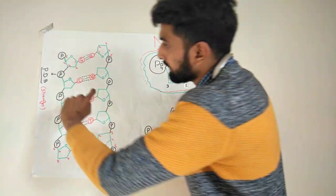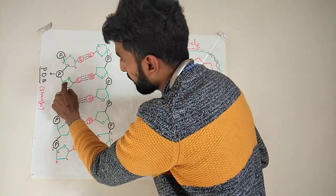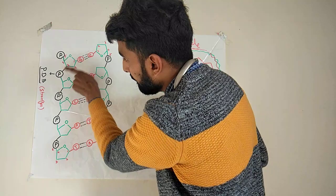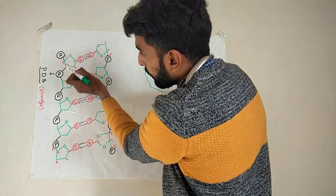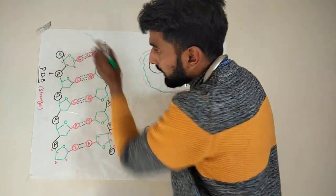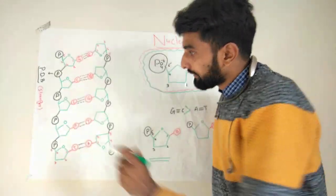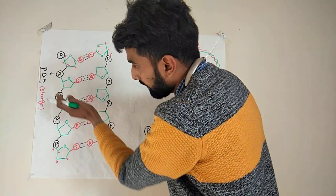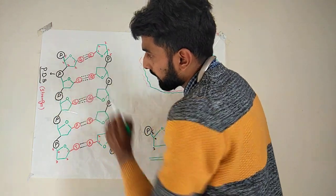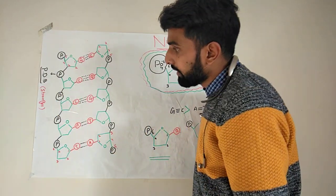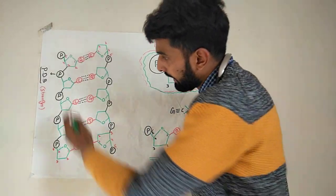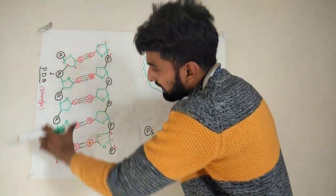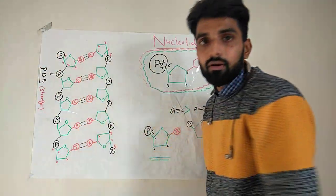Now what will happen: the phosphate group of the next nucleotide below will make a bond with carbon number three of the above nucleotide. Similarly, the phosphate group of the next nucleotide will make a bond with carbon number three of the above nucleotide, and in this way it will keep on moving to form one strand of DNA.